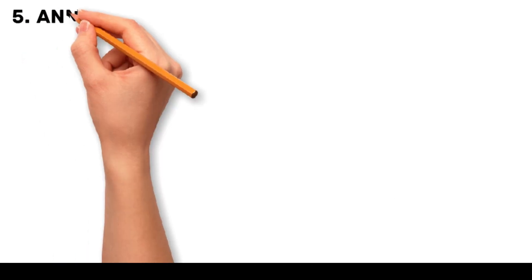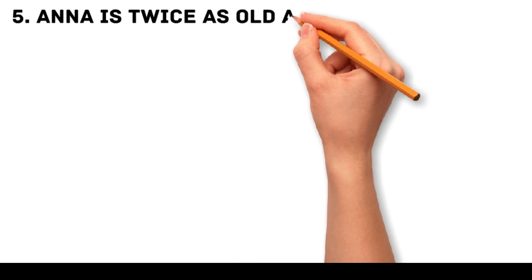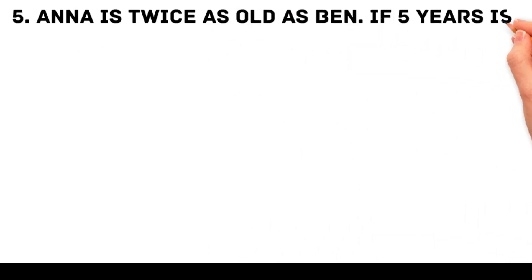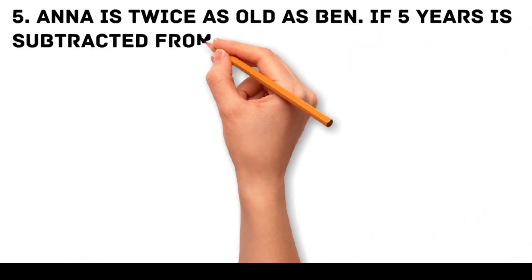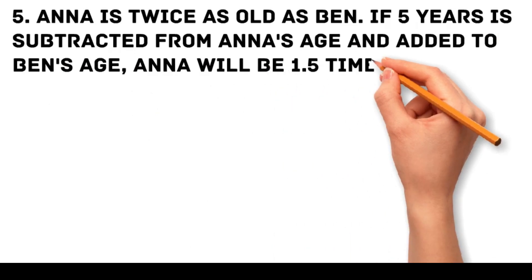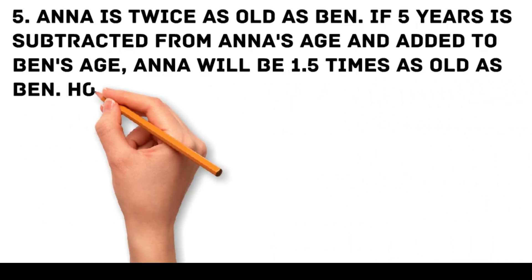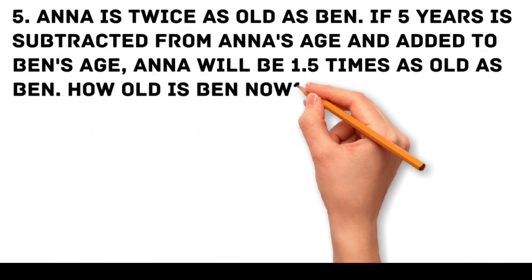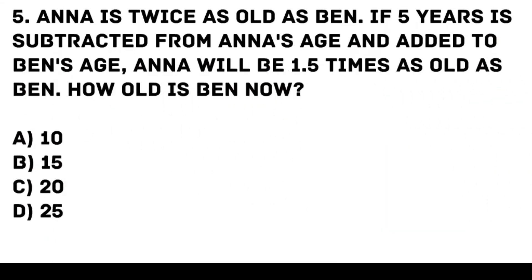Problem 5. Anna is twice as old as Ben. If 5 years is subtracted from Anna's age and added to Ben's age, Anna will be 1.5 times as old as Ben. How old is Ben now? a. 10, b. 15, c. 20, d. 25.